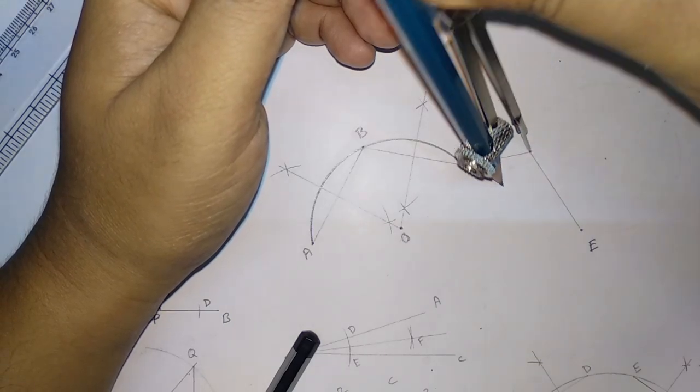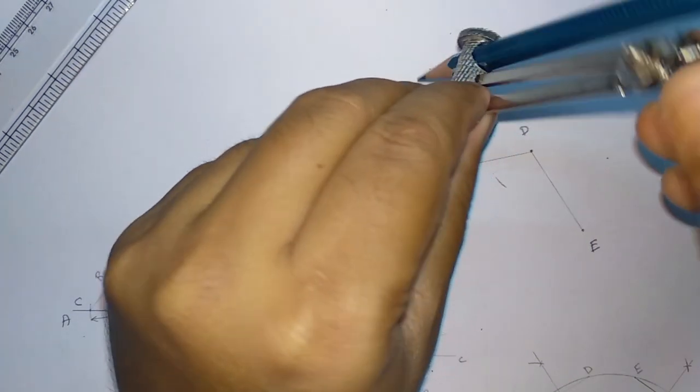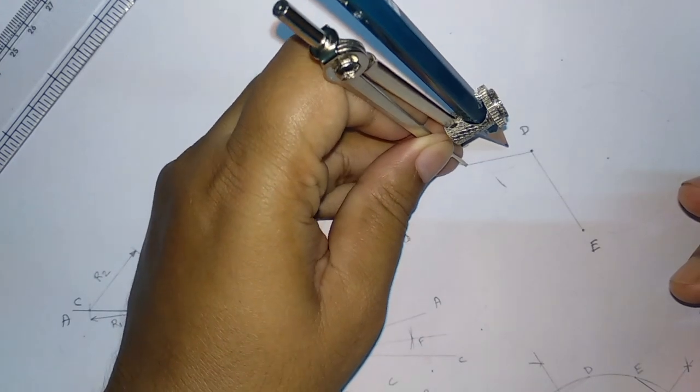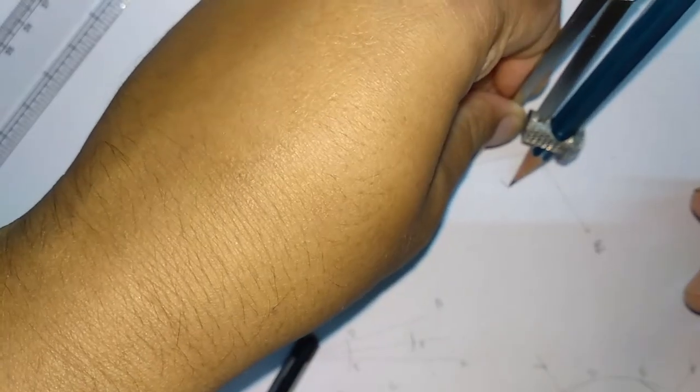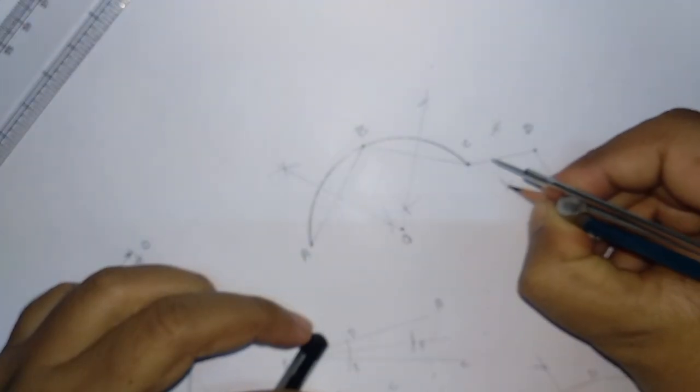So now the points are going to, we have to draw the arc. So this arc is going to touch. This is going to intersect here.